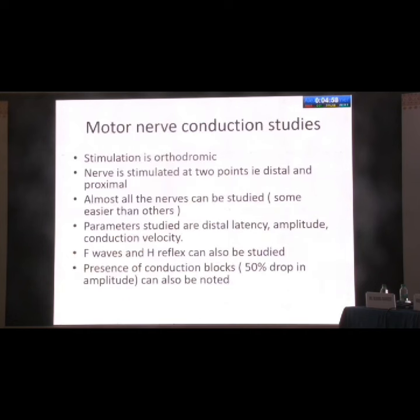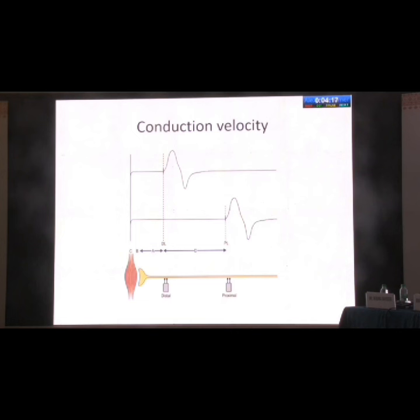Moving to motor nerve conduction studies: stimulation is always orthodromic and is performed at two points — distal and proximal — unlike sensory nerve studies. This helps in detecting a conduction block, which means a 50% or greater drop in amplitude between two stimulation sites. We can study almost all motor nerves of the brachial plexus. Like sensory studies, we measure distal latency, amplitude, and conduction velocity. In addition, we can study F waves and H reflexes, which indicate more proximal lesions around the root level.